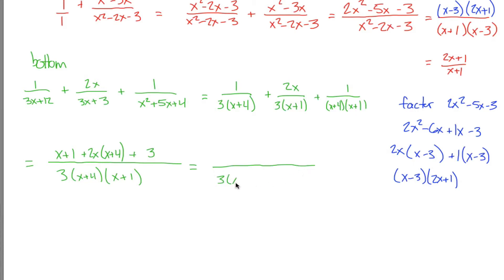The bottom, which is an absolute mess, 3 times x plus 4 times x plus 1. The top, I guess, is even worse. We want to combine like terms up top, but we can't do it because of these parentheses. So let's get rid of those parentheses. Take this 2x and I can distribute it through. That gives me 2x squared plus 8x plus 3. Now if I combine like terms, I get 2x squared. I got 8x plus 1 more x gives me 9x. I got 1 and 3 gives me 4.